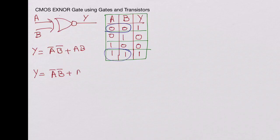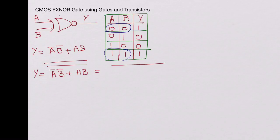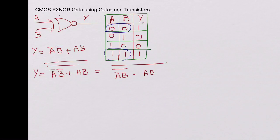Now let's apply two inversions to this expression. Taking the double complement of Ā·B̄ + A·B, we get the NAND form: the result becomes (Ā·B̄) bar NAND-ed with (A·B) bar — so the plus becomes a multiply under the outer inversion, giving us a NAND-of-NANDs structure.